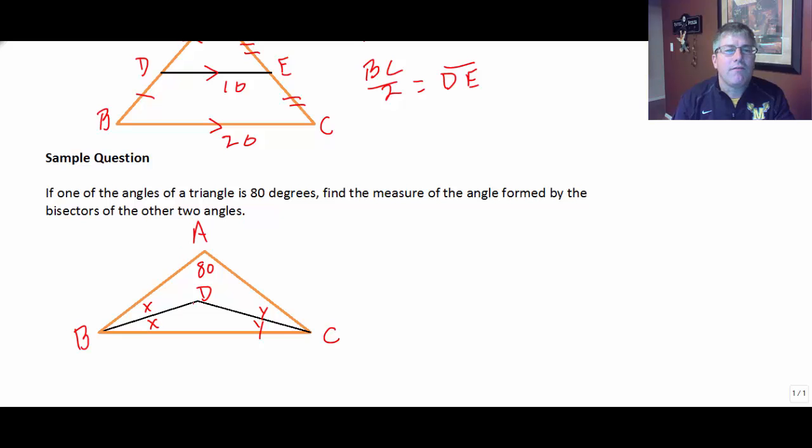And we want to find the measure of angle D. If one of the angles of the triangle is 80, find the measure of the angle formed by the bisectors of the other two angles, we want to find the measure of angle BDC.